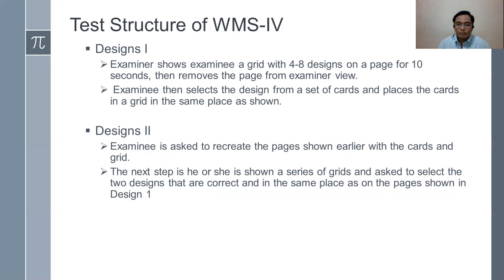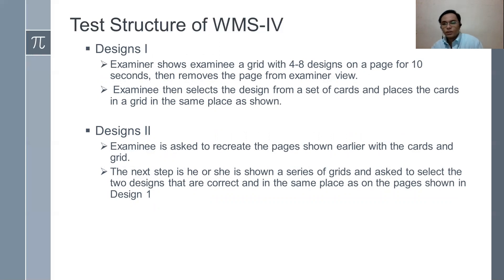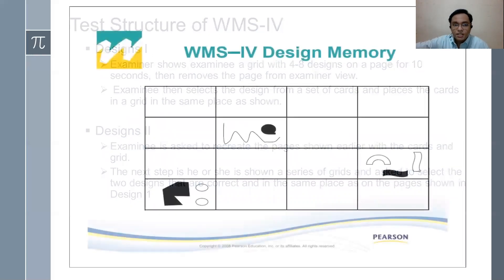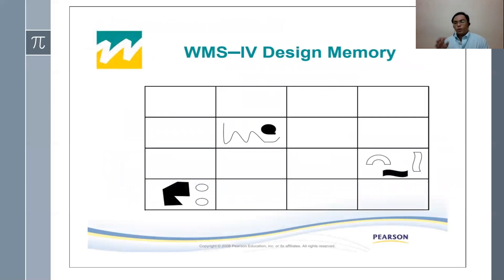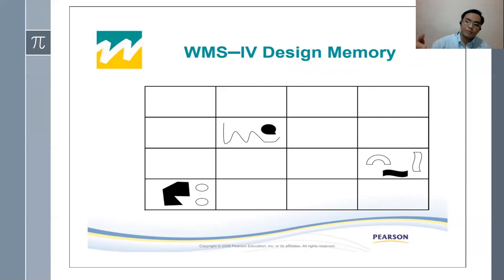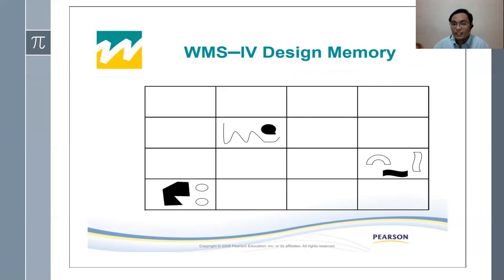Designs 1: the examiner shows the examinee a grid of four to eight designs on a page for 10 seconds, then removes the page from view. The examinee selects designs from a set of cards and places them in a grid in the same position as shown. Designs 2: the examinee recreates the page shown earlier with cards in the grid. Then the examinee is shown a series of grids and asked to select two designs that are in the correct same place on the pages shown in design 1.